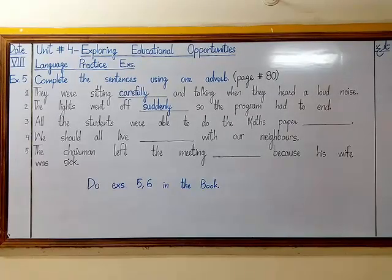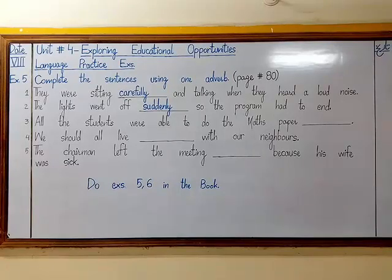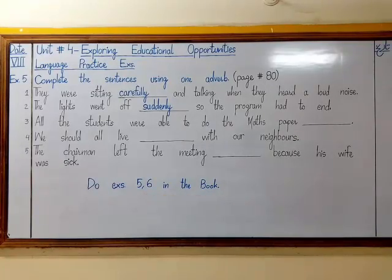This is your home assignment: do exercises 5 and 6 in the book. Both exercises must be done in the book. Write the date on the top — English date on the top left-hand side, Islamic date on the top right-hand side. Note down the homework in your diaries. Do exercises 5 and 6 in the book.